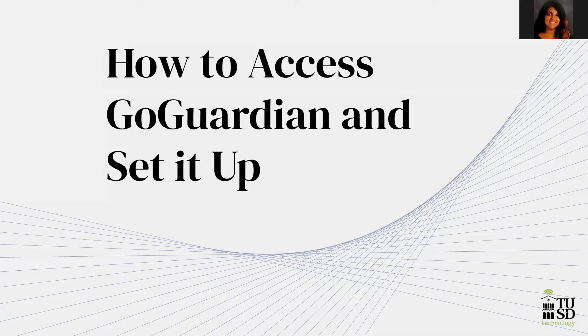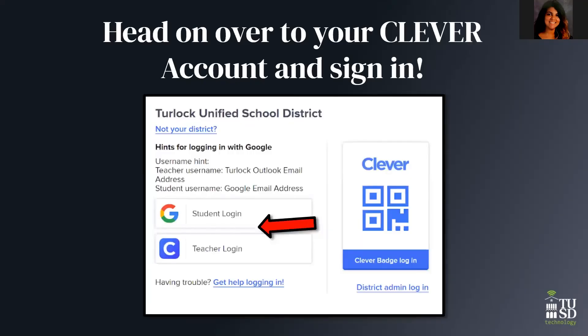To access GoGuardian, the very first thing you and your paras would do is go to Clever and click teacher login. Your paras would also click teacher login. Your paras should have requested a Clever account — a Google form went around to all sites. The only way we can get GoGuardian up and running for our paras is to make sure they have a Clever account. If they do not, definitely email Marshall and me so we can get everything connected.